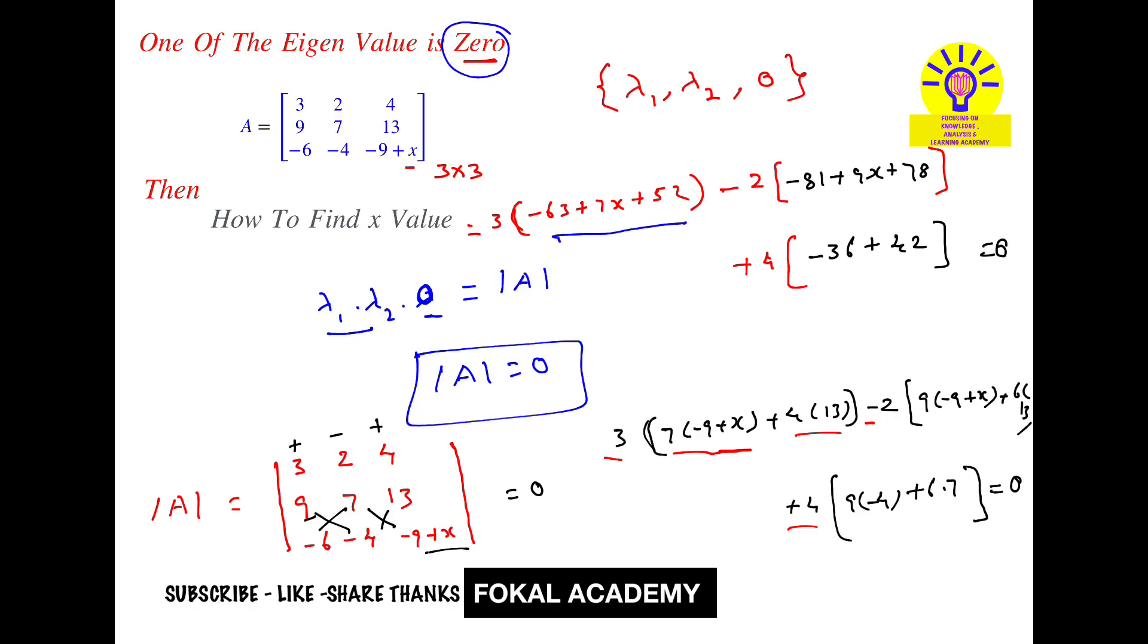Now simplify this. This becomes 3 into 7x, so minus 63 plus 52 nothing but minus 11, minus 2 into, keep 9x as it is, next minus 81 plus 78 nothing but minus 3, plus 4 into, so this will become 6. That's equal to 0.